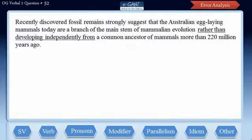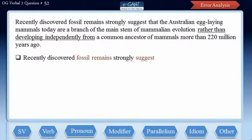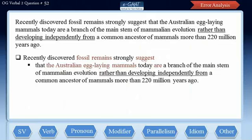The first clause reads: 'recently discovered fossil remains strongly suggest' — here 'fossil remains' is the subject and 'suggest' is the verb. The presence of 'that' brings us to another clause: 'that the Australian egg-laying mammals today are a branch of the main stem of mammalian evolution, rather than developing independently from a common ancestor of mammals more than 220 million years ago.' Here 'the Australian egg-laying mammals' is the subject and 'are' is the verb.